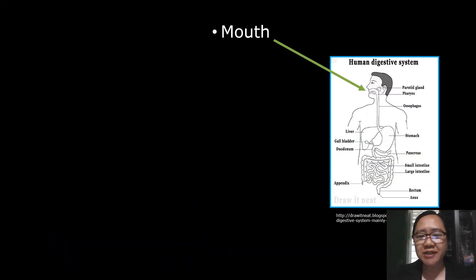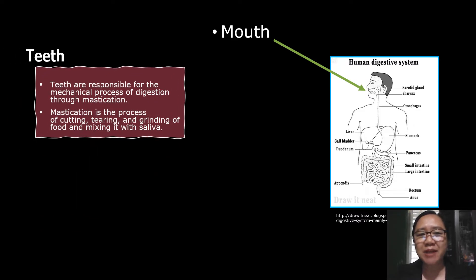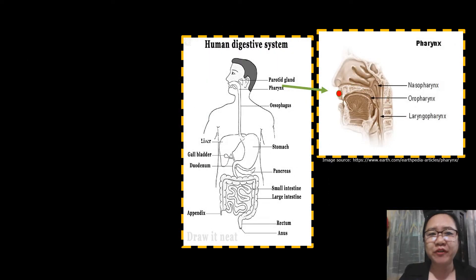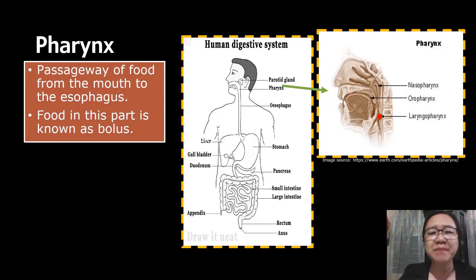Let us trace the pathway of food in the alimentary canal. First is the mouth. The mouth consists of teeth. Teeth are responsible for the mechanical process of digestion through mastication — the process of cutting, tearing, and grinding of food and mixing it with saliva. In the mouth, there is also a tongue, which assists in swallowing the food that we eat. The second part of the alimentary canal is the pharynx, which is the passageway of food from the mouth to the esophagus.